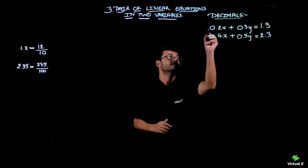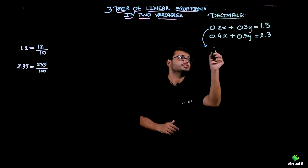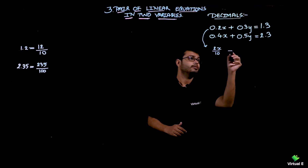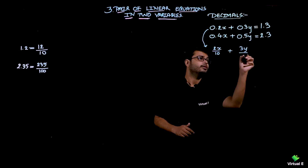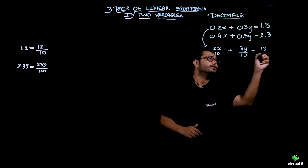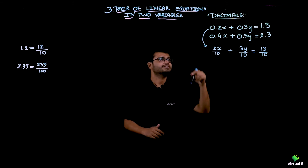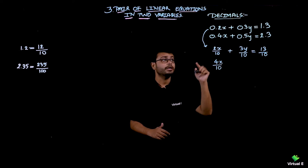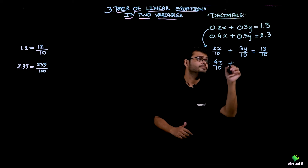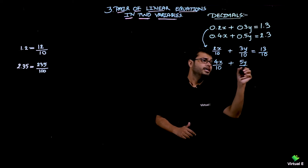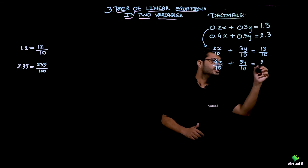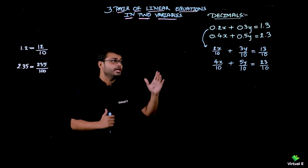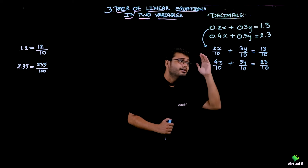Let's start with the first equation. It becomes 2x over 10 because there is only one decimal place, then plus 3y over 10 equals 13 over 10. The second equation: 4x over 10, and 0.5 becomes 5y over 10, equals 23 over 10. Now we have the equations in fraction form, not yet in whole number form.